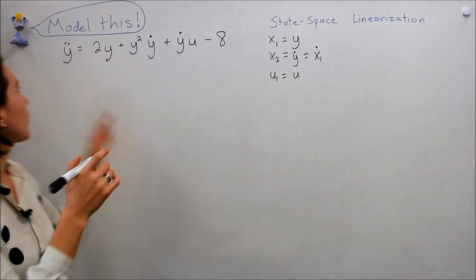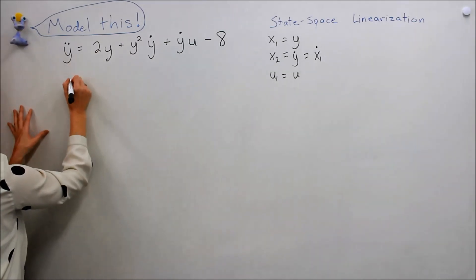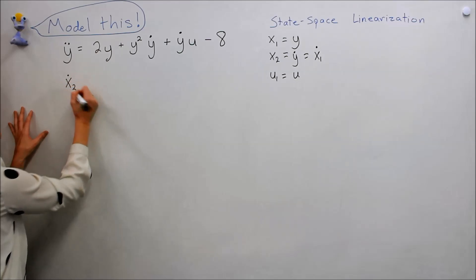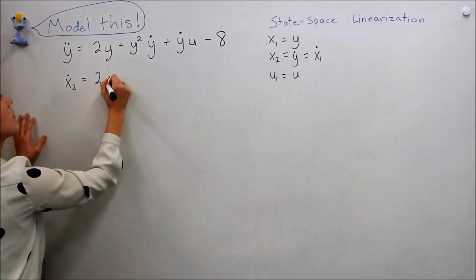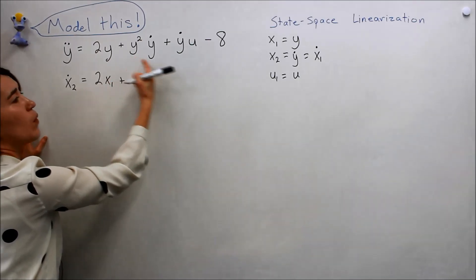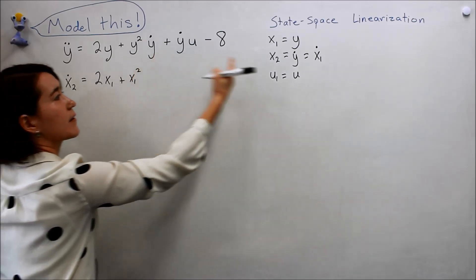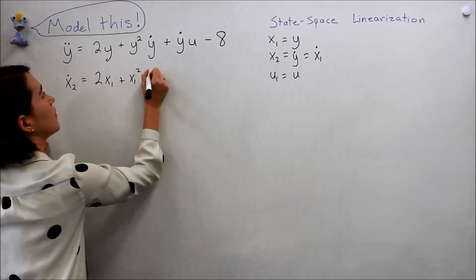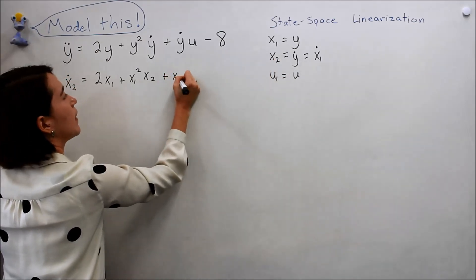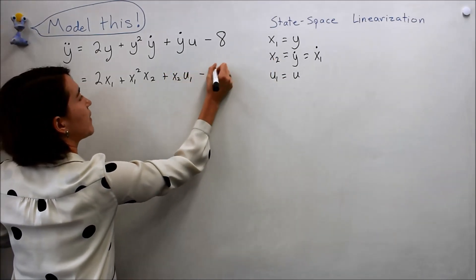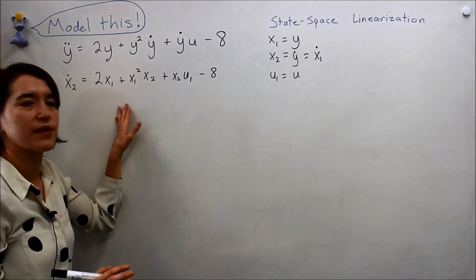So we have rewritten our variables, let's substitute them into our equation. For y double dot, that's just x2 dot. Two y equals x1, y squared is x1 squared, y dot is x2, plus x2 here, and then u1 minus 8. This looks a little bit better, everything just in x1, x2, and u1.